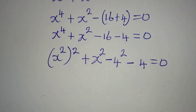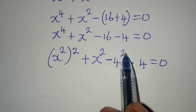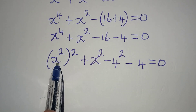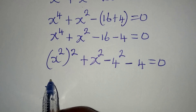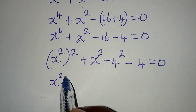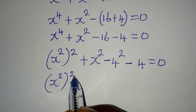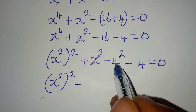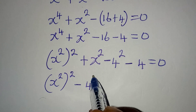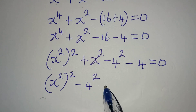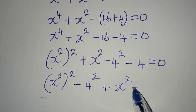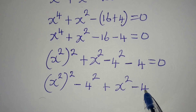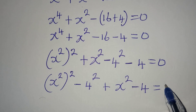The next thing to be done is to rearrange this. Remember this is negative 4 squared — I can bring it to this side so that I can apply the difference of two squares, so that I will have x squared minus x squared, then minus x squared minus 4, which is equal to 0.